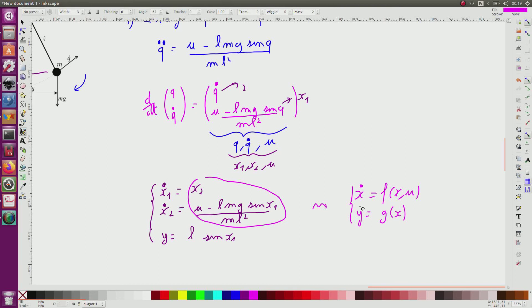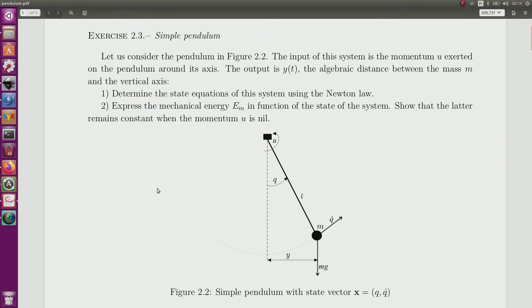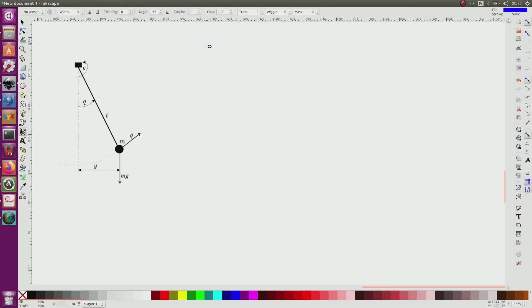Now for the second question, I have to express the mechanical energy in function of the state of the system, and then show that it remains constant when U is nil. So second question, the mechanical energy Em is equal to the sum of the kinetic energy and the potential energy. So the kinetic energy is directly related to Q dot, and it will be half of ML squared Q dot squared.